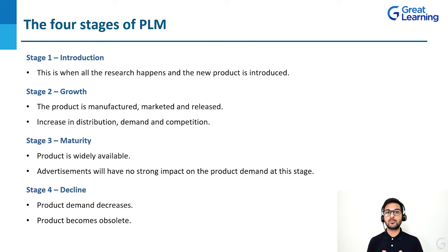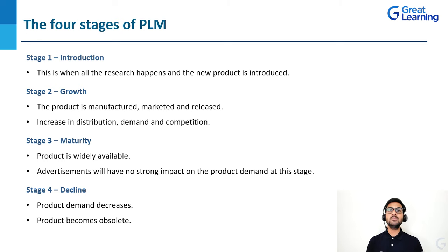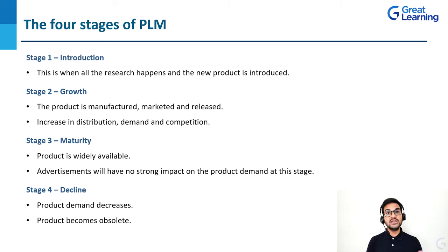When we talk about introduction of the product, this is when all the research happens and the new product is introduced — it is about conception, designing, and the prototype. Once we talk about the market-ready version, then starts the growth phase where the product is manufactured, marketed, and released, including marketing and customer segmentation. Then comes the maturity stage, where the product is widely available and advertisements have no strong impact on demand. And finally, we reach the decline stage, where product demand decreases because it is no longer relevant for customers.